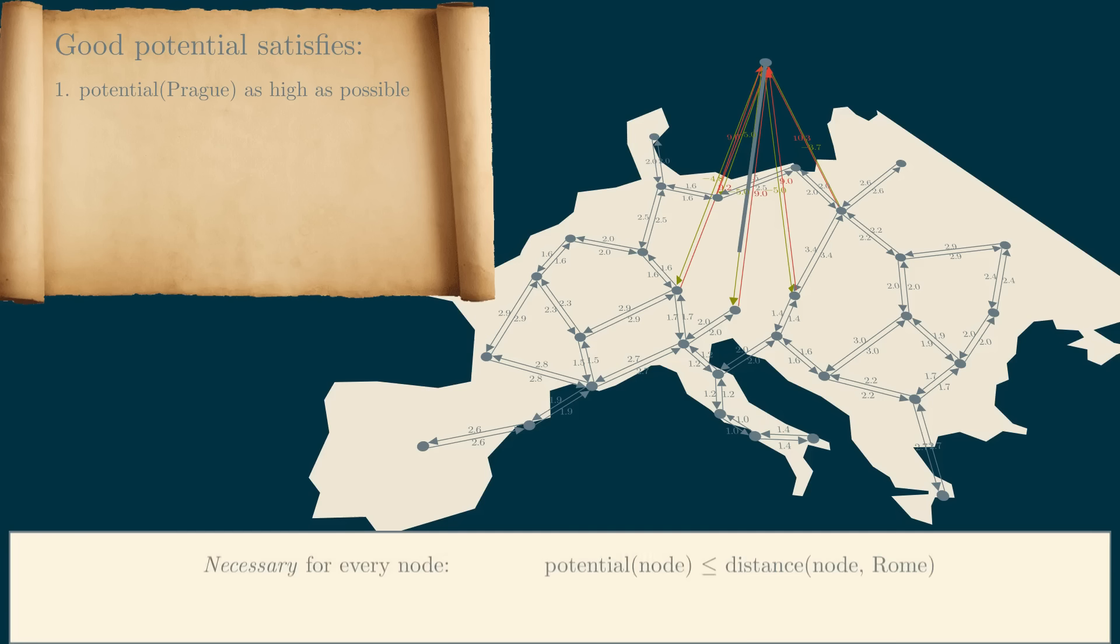So we have a necessary condition that the potential of each node needs to satisfy. It's always, at most, the distance from that node to Rome. Although this condition is quite easy to understand, it's unfortunately not sufficient. Even if the potential of Prague is just 3, but we leave all other potentials to be 0, all of these edges are still negative, although the distance from Prague to Rome no longer is.